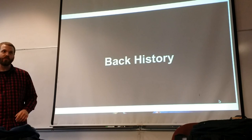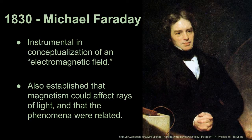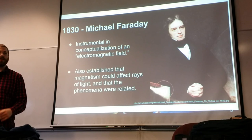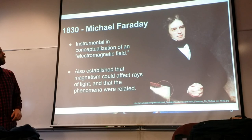We'll start right in the back history — not as far back as the Greeks — but pretty far back. In 1830, Michael Faraday was doing some work on electromagnetism. He was widely recognized as being instrumental in the conceptualization of the electromagnetic field that we kind of take for granted these days. He also established that magnetism could affect rays of light and that the phenomena were somehow related. This would of course be mixed with Maxwell's equations and the quantum mechanics revolution down the line, but a big chunk of it started here in 1830.